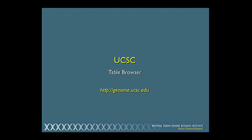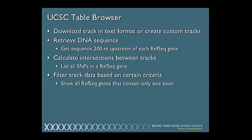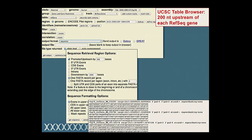The final Santa Cruz feature I'll highlight is the Table Browser, which lets you get data in text format rather than graphical display — suitable for Excel or other text programs. You can retrieve DNA sequence upstream of genes across the whole genome, such as the promoter sequence for every gene. You can get intersections between tracks — for example, listing all SNPs within a particular gene. You can also filter track data on criteria, such as finding all single-exon genes in the human genome. I'll demonstrate retrieving the sequence 200 nucleotides upstream of each transcript in the human genome, and come back to this when we discuss the Galaxy Browser.